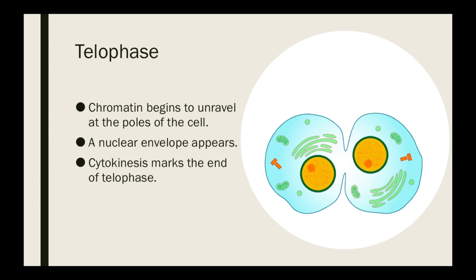During telophase, the chromatin begins to unravel at the poles of the cell — on either side. A nuclear envelope appears, and cytokinesis marks the end of telophase. Cytokinesis is the cytoplasmic division, and that is what marks the end of telophase.